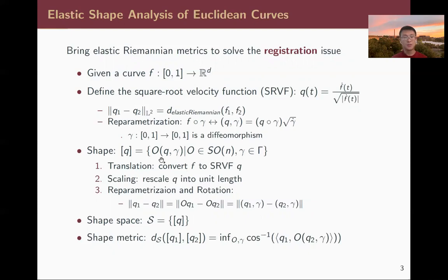The theoretical result tells us that under the SRVF representation, the L2 metric equals the original elastic Riemannian metric for the original curve. Since this metric is preserved under reparametrization and rotation group action, and after removing translation and scaling, we represent the shape by the orbit or equivalence class [Q], containing all rotations and reparametrizations. We also have the shape space script S, with shape metric DS based on this elastic metric.